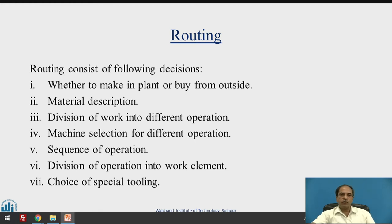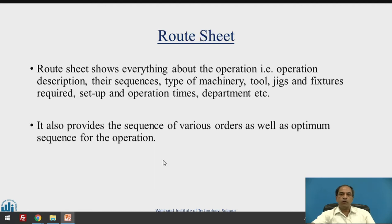Once we decide the material, workflow, and machines, the next important question is the sequence of operations, also generally called the machining process flow. The process flow is very important and cannot be changed arbitrarily. We also divide operations into smaller work elements, and if special tooling is required, we must account for tooling as well. Routing consists of all these considerations.